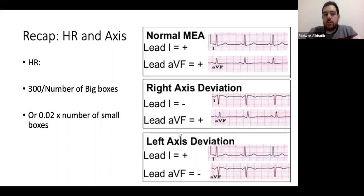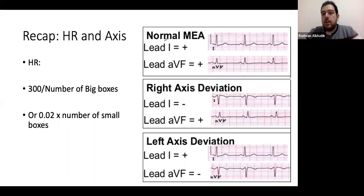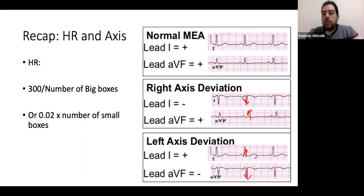As a recap: to calculate heart rate, either multiply 0.04 by the number of small boxes between RR intervals then divide 60 by that number, or divide 300 by the number of big boxes between RR intervals. For axis: normal axis means both lead one and AVF are positive. Right axis deviation — leads are right for each other (one down, one up). Left axis deviation — leads leave each other (one positive, one negative in opposite direction).